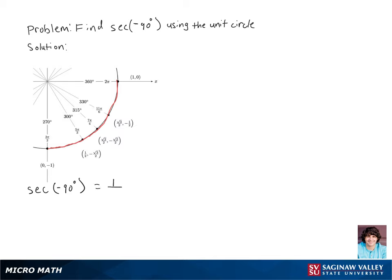The problem here is that we can't divide a number by 0, so our final answer is 1 over 0, which is undefined. So secant of negative 90 degrees is undefined.